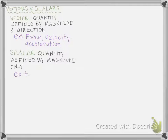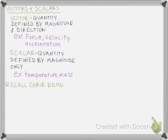Two examples of scalars are temperature — how warm or cold it is outside — and mass. Those are the differences between a vector and a scalar. We're going to focus today on vectors, those quantities that have both a magnitude and a direction, and do a review on how to do math with vectors, because that's a big part of statics.